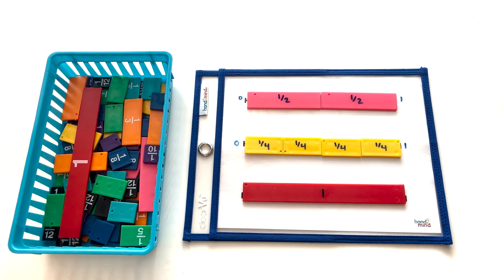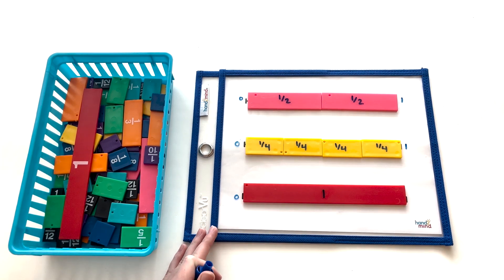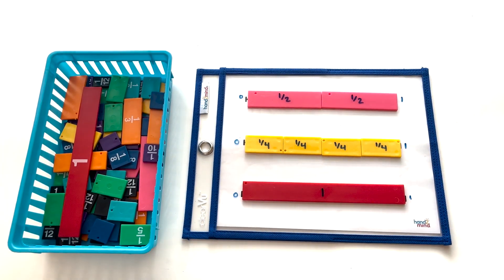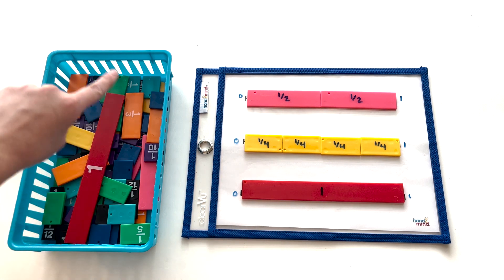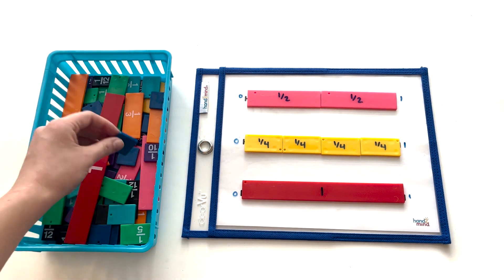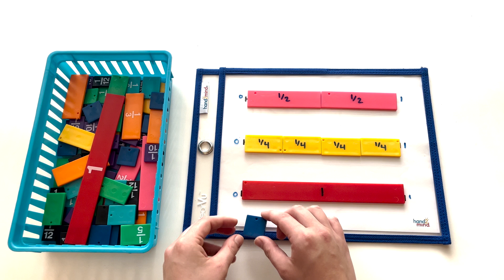For our last example of equivalent fractions, we're going to start the same way we have and label each side on the left with zero and the right with one for one whole. We'll be exploring these navy rainbow fraction tile pieces this time.